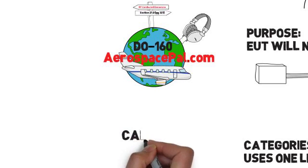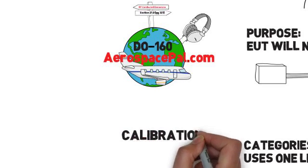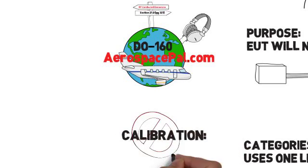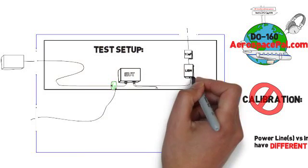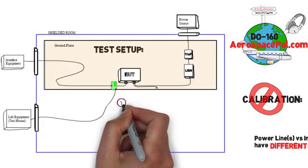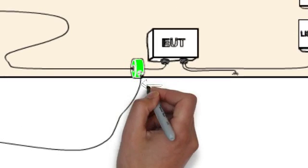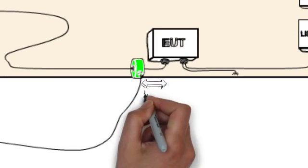Now for this test, your equipment needs to be calibrated, but there's no specific calibration of the entire test setup. There are a few things that matter when setting up for conducted emissions. Number one, your current monitor needs to be less than 5 centimeters from your EUT connector.